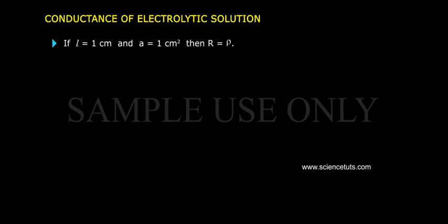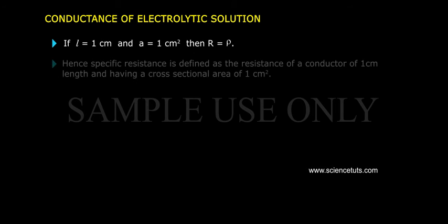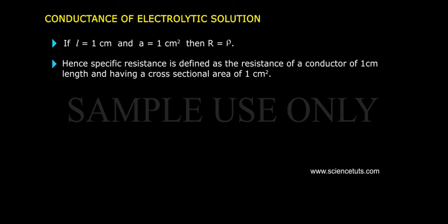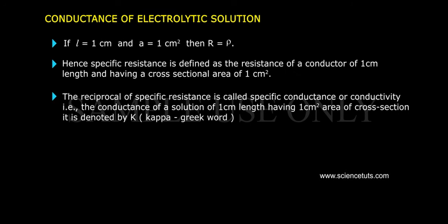If L = 1 cm and A = 1 cm², then R = ρ. Hence specific resistance is defined as the resistance of a conductor of 1 cm length having a cross-sectional area of 1 cm². The reciprocal of specific resistance is called specific conductance or conductivity — that is, the conductance of a solution of 1 cm length having 1 cm² area of cross-section.